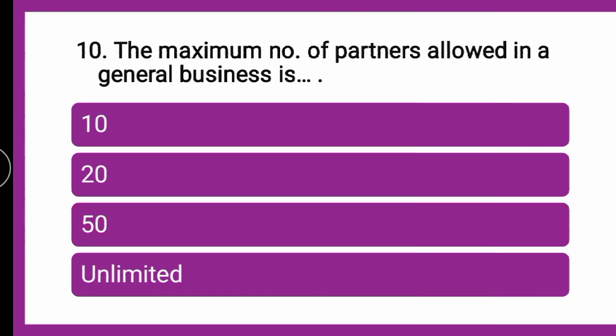Next question: The maximum number of partners allowed in a general business is DASH — whether 10, 20, 50, or unlimited. The correct answer is 20, because according to the partnership firm's laws and regulations, the number of partners allowed is 20.